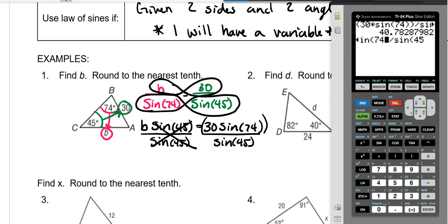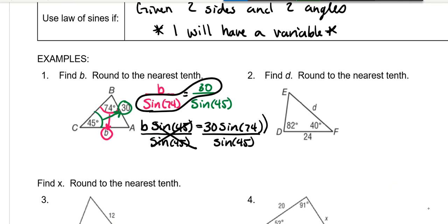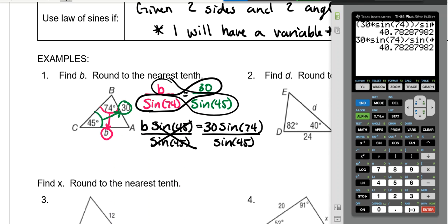I'm curious if it will give you the same answer without those extra parentheses. It does. So it looks like you don't actually need that second set of parentheses. So our answer is 40.78 or 40.8.